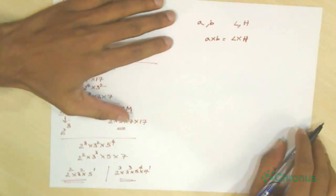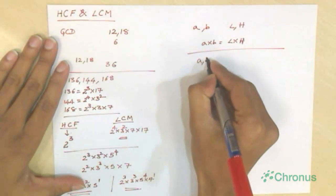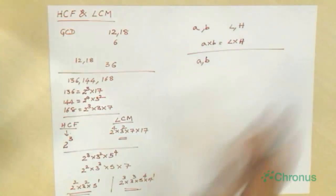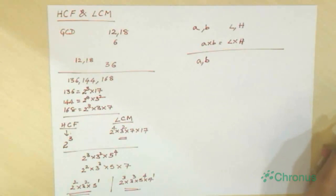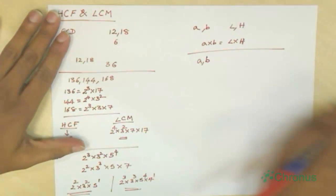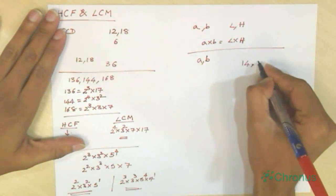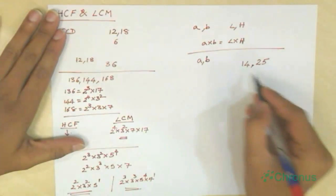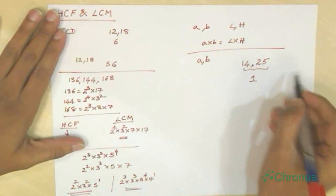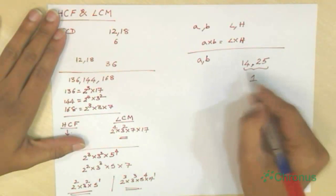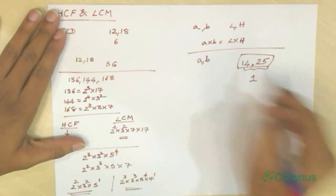Another important concept: two numbers A and B are said to be relatively prime or co-prime if their HCF is 1. That means if two numbers don't share a common factor, they are called relatively prime. For example, 14 and 25 — 14 is not a prime number and 25 is not a prime number, but their GCD is 1. Since they don't share a common prime factor, these two are called relatively prime or co-prime.